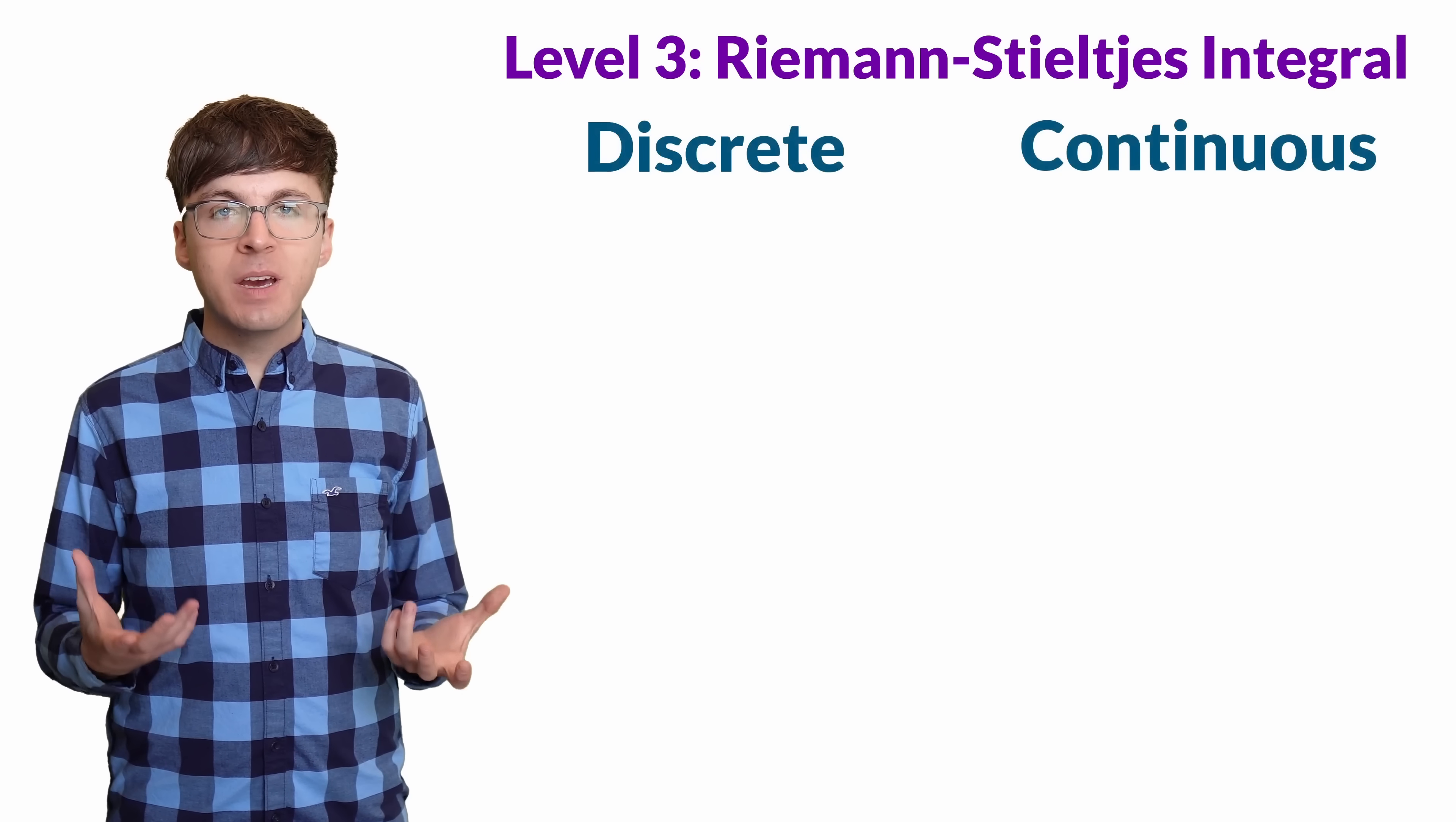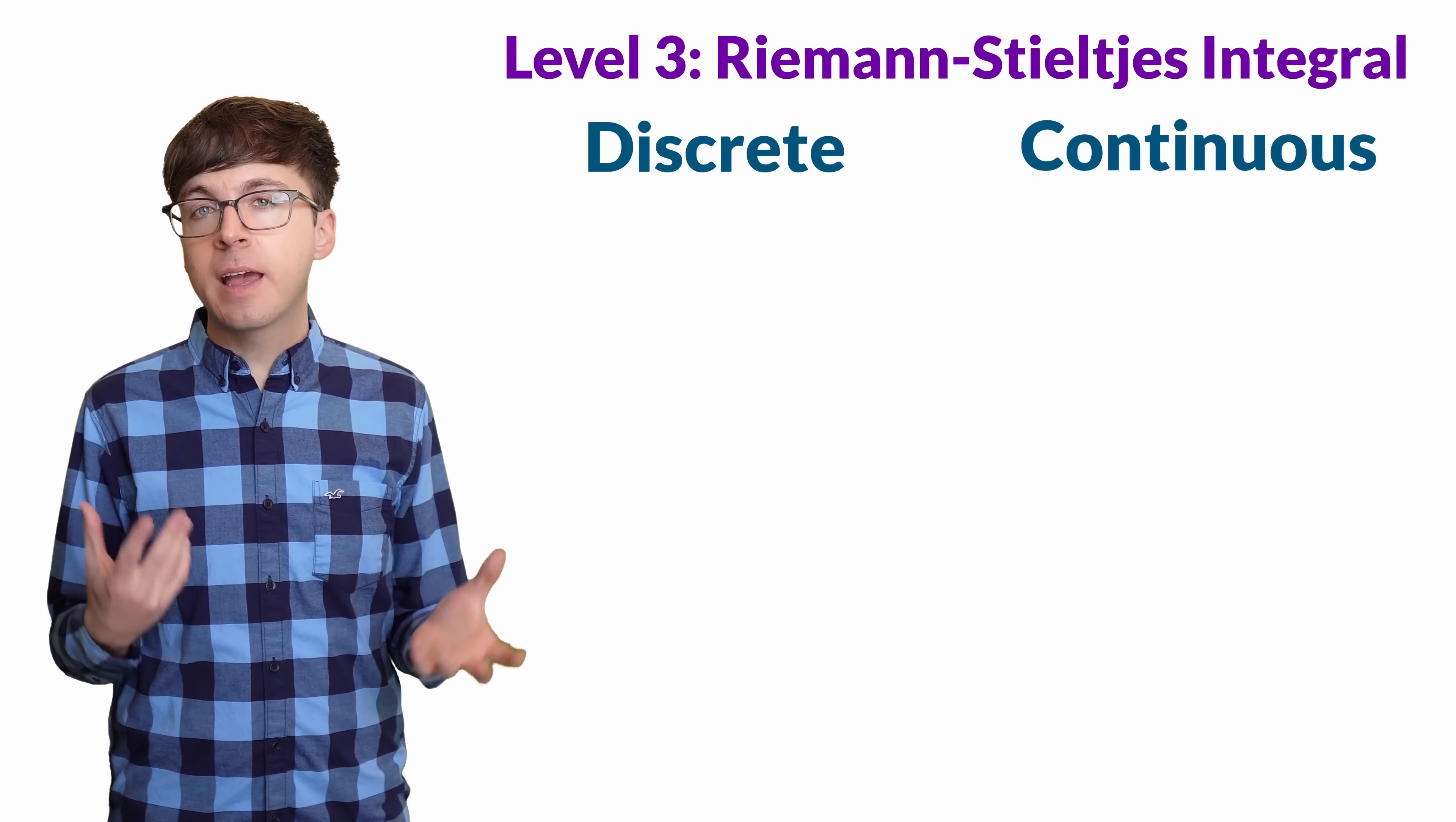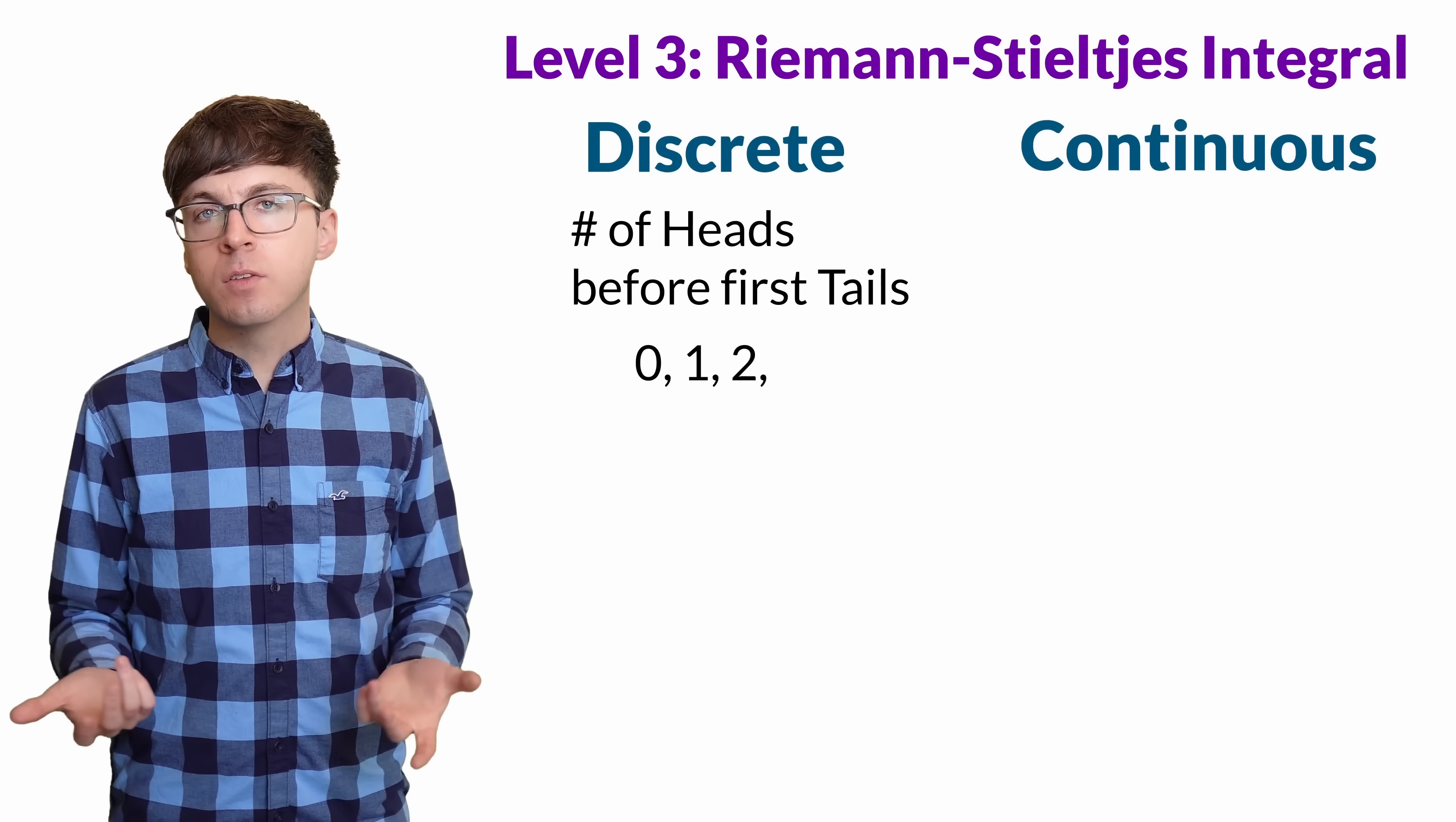So why would we want to integrate one function against another? One of the main benefits is in probability. In probability, we explore discrete and continuous random variables. Discrete random variables have only countably many possible values, like if you repeatedly flip a fair coin and count how many times you get heads before the first tails. So you could get 0, 1, 2, and so on.